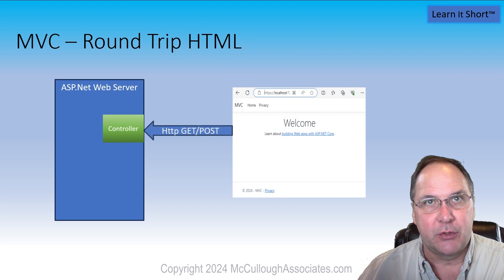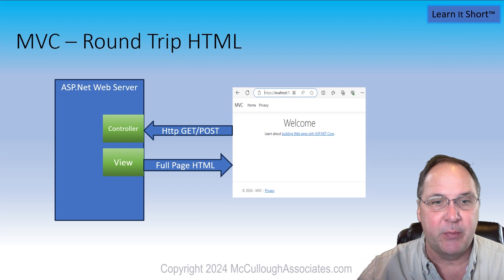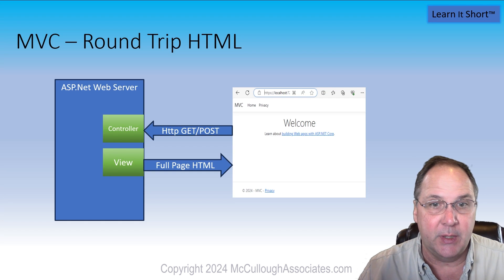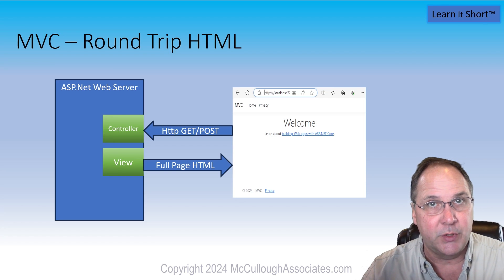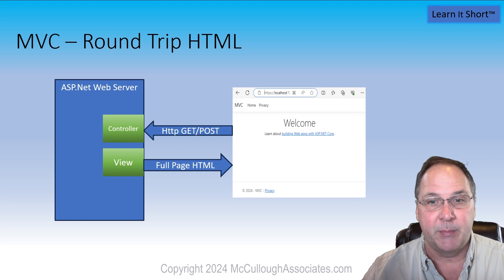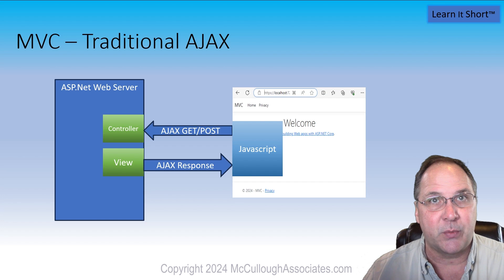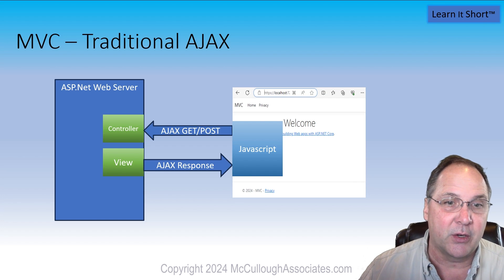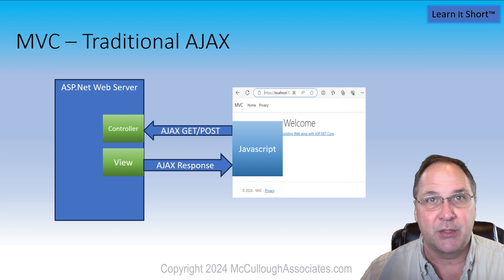Model View Controller is a traditional web application — it's going to give us round trip. You post or get with an HTTP request to the server, that invokes a controller action, a method within a controller class, and that designates a view. Written in Razor syntax, mostly HTML, it renders a full page — a full HTML response that replaces the current page. We can also write some JavaScript on the client-side, and do asynchronous AJAX requests and responses still invoking our controller, to create more dynamic experiences for our end-users.